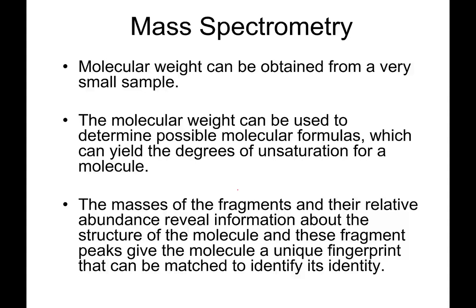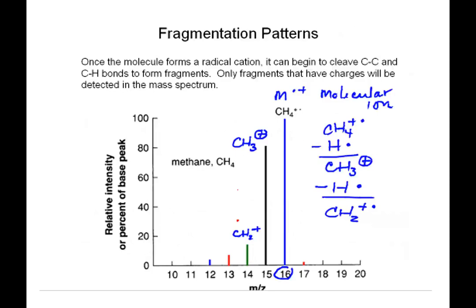So the highest peak gives us the molecular weight. I'll show you in a moment how we get molecular formulas from that. The masses of the fragments and their abundance — in other words, the spectrum — give us a fingerprint to work from.